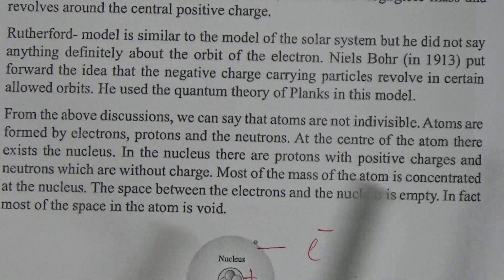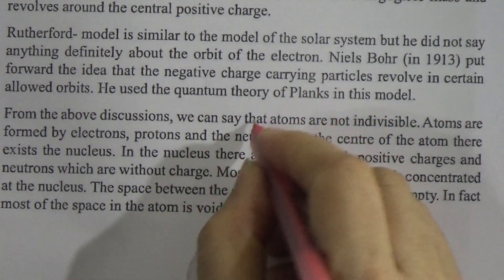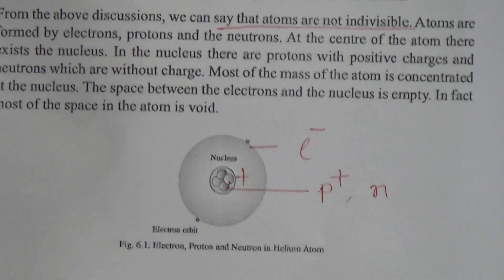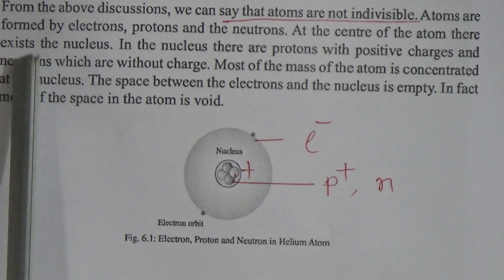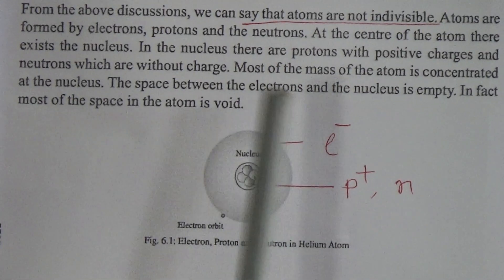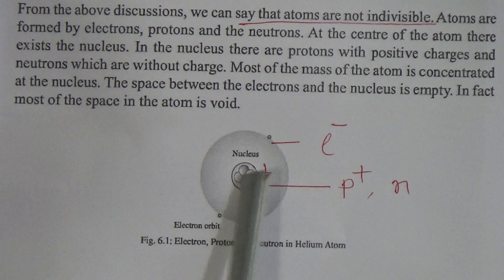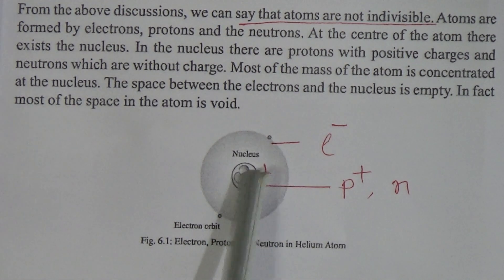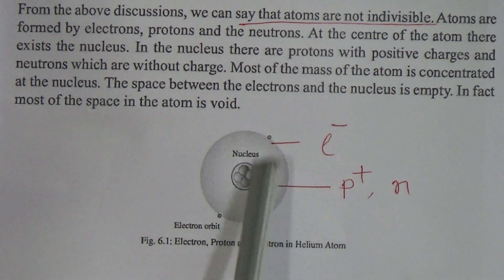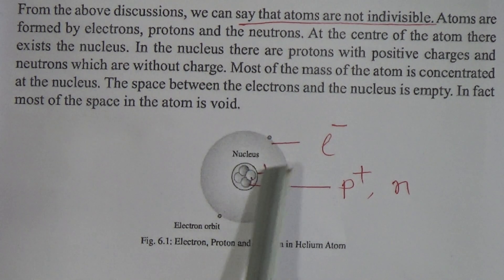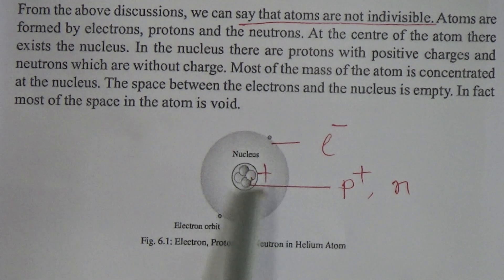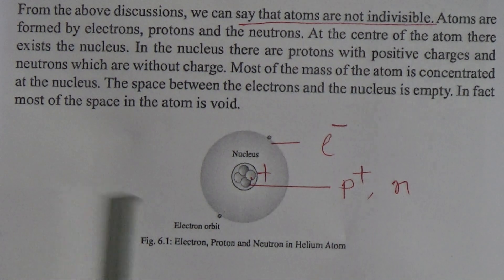From the above discussion we can say that atoms are not indivisible. Atoms are formed by electron, proton and neutron, and at the center of the atom there exists the nucleus. In the nucleus there are protons, which are positively charged, and neutrons, which are chargeless. Most of the mass of the atom is concentrated at the nucleus and the space between the electron and nucleus is empty. In fact, most of the space of the atom is void.